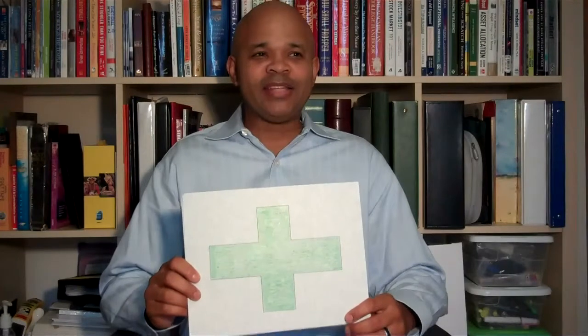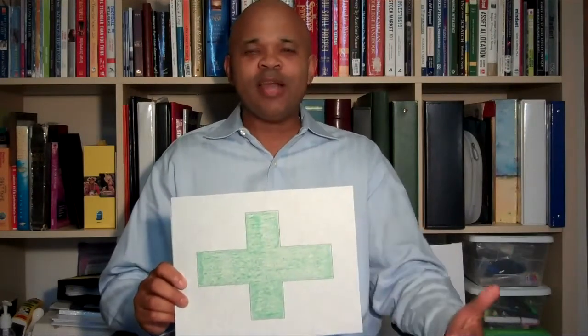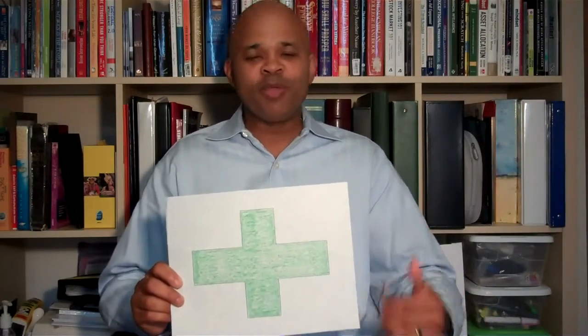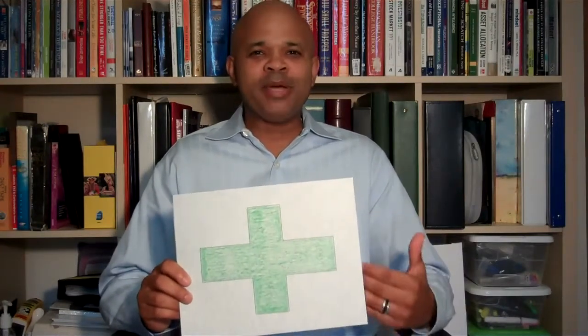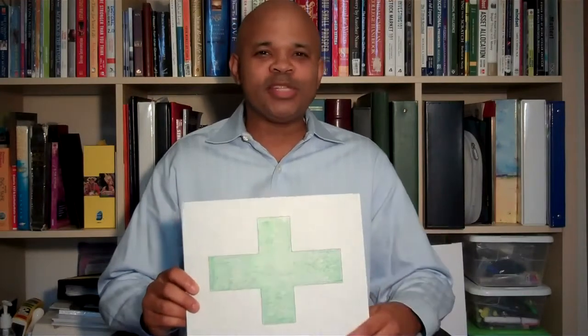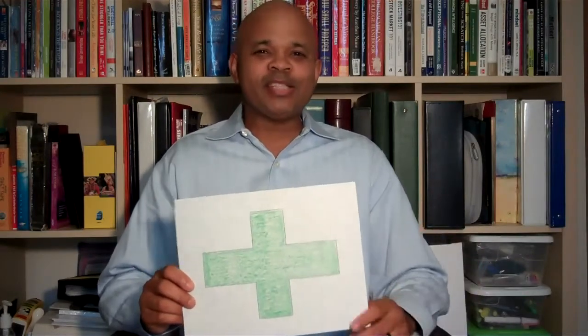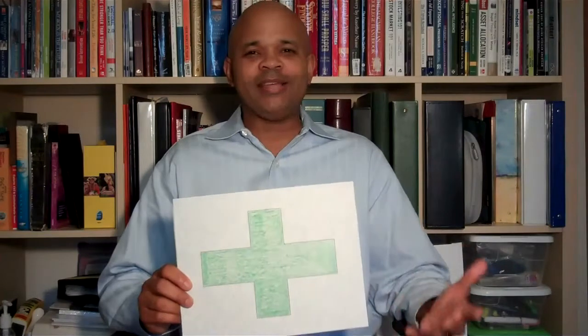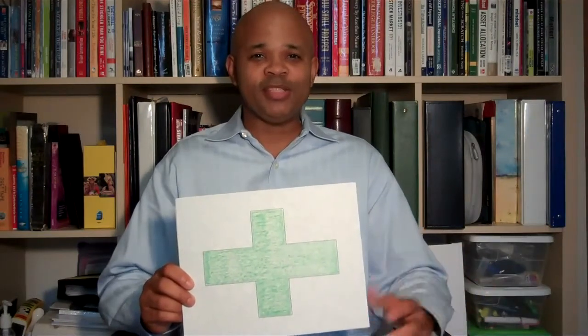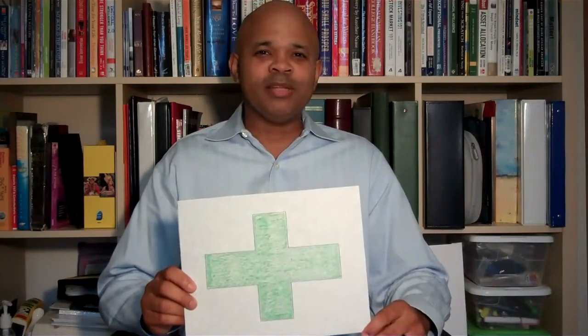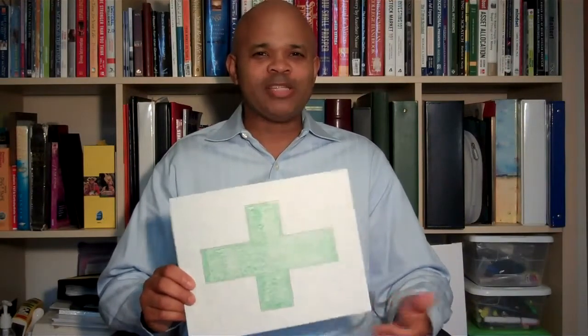Now when you look at the addition sign, of course that represents something that's positive or something being added to you, so to speak. Now when it comes to your money, this symbol is going to represent income. Income as an adult can represent things like the job that you get paid to do. Income could come in the form of interest that you're earning from money in the bank. It could come in the form of dividends or possibly even capital gains as well.